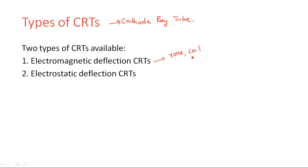In electromagnetic deflection CRTs, we use a yoke and coil, where the coil is surrounded by the yoke. To display the signal, some flux is generated, and because of that flux, the electron beam is deflected on the CRT screen. However, when a coil is introduced into the equipment, it becomes bulky in nature, so this type of CRT screen is not generally preferred for domestic or commercial purposes.